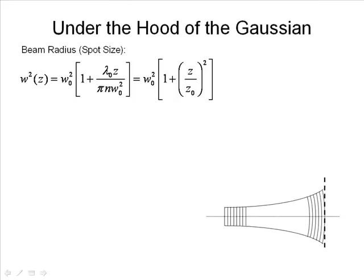Let's go under the hood of the Gaussian and take another look at this, because this is important. The beam radius, the spot size, is given by W of z. This essentially says how the beam changes as a function of the z direction. This point right here where the beam has its minimum size is z equals 0, and this is where we define W-naught. As we propagate along z, the term W of z essentially says how the radius of the beam changes as z changes.